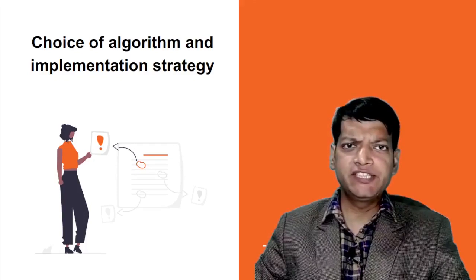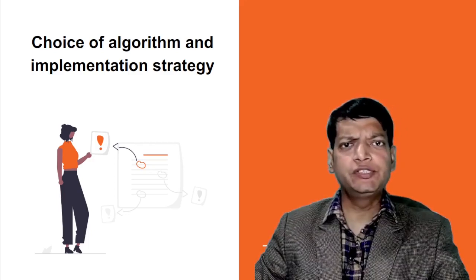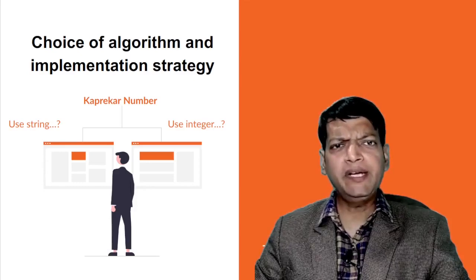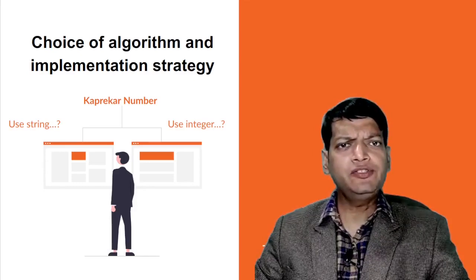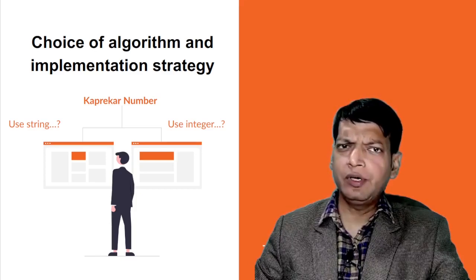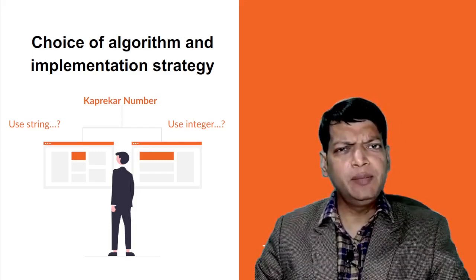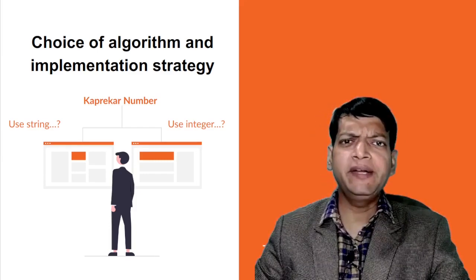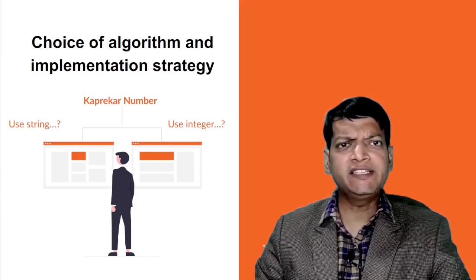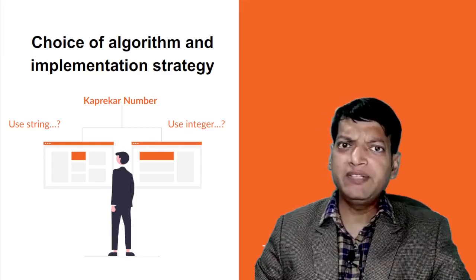Choice of algorithm, as the name suggests, refers to the approach or logic that you are using among many choices which might be available to you. For example, if the problem is on Kaprekar number where you are required to split an integer into two parts, you may either use string logic for splitting the number or you may use division by a suitable divisor. Since using string is generally more computationally expensive and is both slow and time consuming, the division method is more suitable in this case. So we see that it is not just about the correct answer but also about efficiency and optimization.